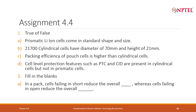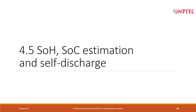There is another assignment — simple true and false: do prismatic lithium-ion cells come in standard shape and size? Cylindrical ones do come in standard sizes. The 21700 cell has a 70 mm length and 21 mm diameter. Prismatic ones can come in different sizes — not always standard. There are also fill-in-the-blank questions to complete.